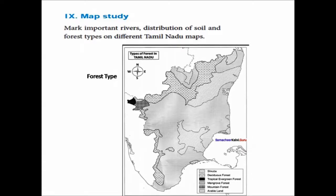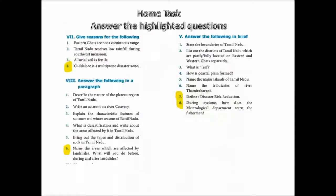For map study activity: mark important rivers and their tributaries on a Tamil Nadu river map. On two separate Tamil Nadu political maps, mark the distribution of soil types and forest types respectively. Refer to the textbook to complete these maps.